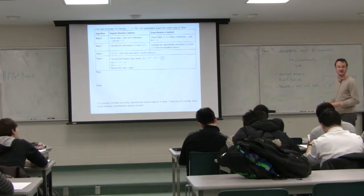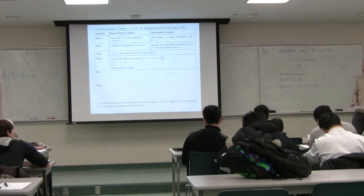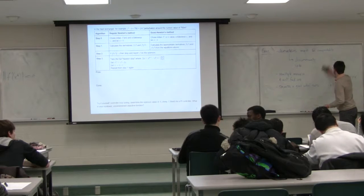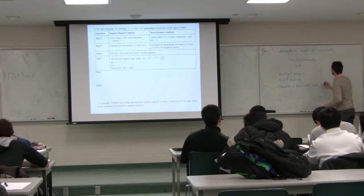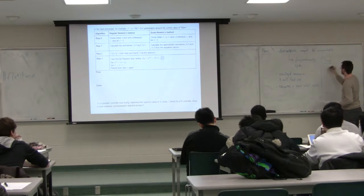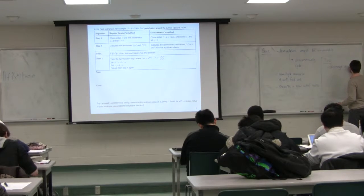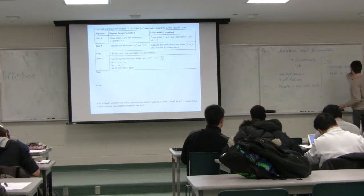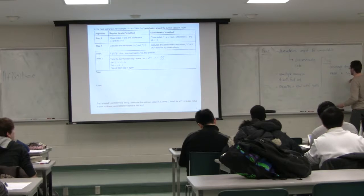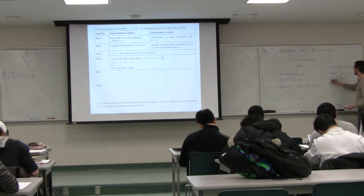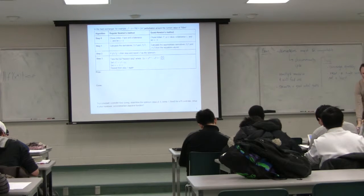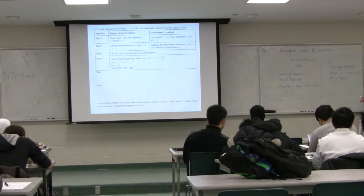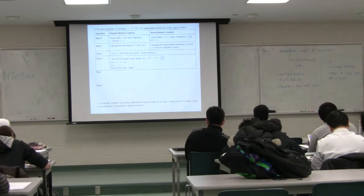The pros: Newton's method is extremely fast — you'll see in the assignments that you converge really quickly. Also, you just need a single point and not a bound. This doesn't seem like a positive just yet, but we'll come to methods where you're constantly moving your lower and upper bound closer to bracket the optimum. Newton's method just moves a single point around. This idea of bounds will become clearer in the next section.